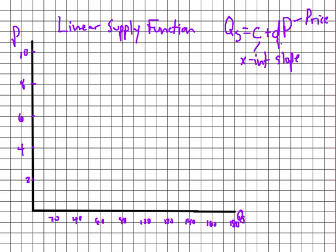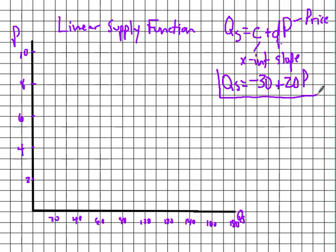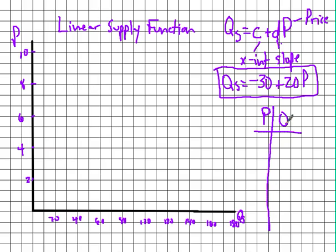Let's work with the function: quantity supplied equals negative 30 plus 20P. This equation represents a line on our graph, and our job is to figure out how to plot the points so we can draw this supply curve.